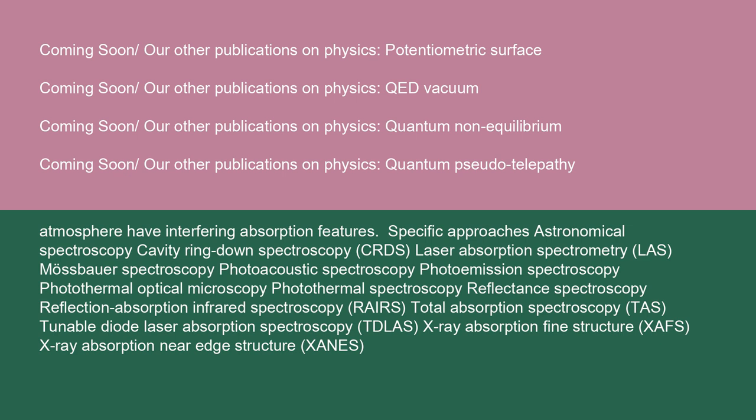Specific approaches in absorption spectroscopy include: astronomical spectroscopy, cavity ring-down spectroscopy (CRDS), laser absorption spectrometry (LAS), Mössbauer spectroscopy, photoacoustic spectroscopy, photoemission spectroscopy, photothermal optical microscopy, photothermal spectroscopy, reflectance spectroscopy, reflection-absorption infrared spectroscopy (RAIRS), total absorption spectroscopy (TAS), tunable diode laser absorption spectroscopy (TDLAS), x-ray absorption fine structure (XAFS), and x-ray absorption near edge structure (XANES).